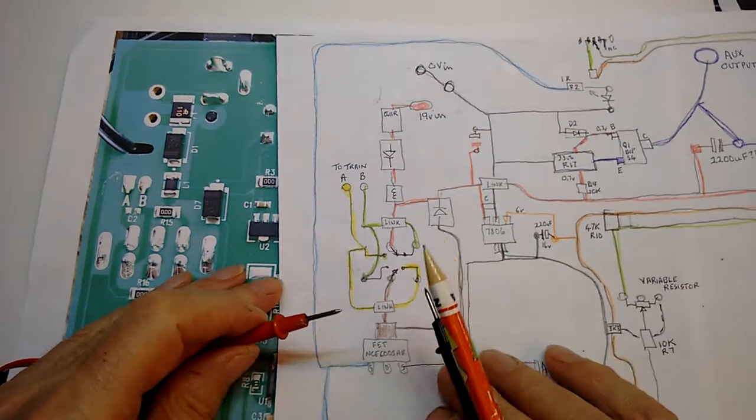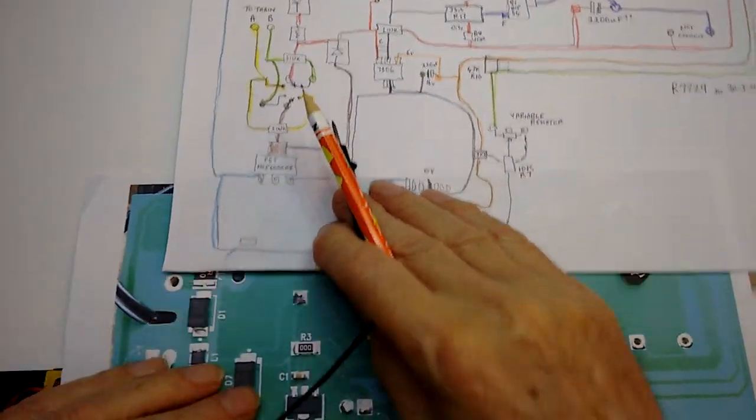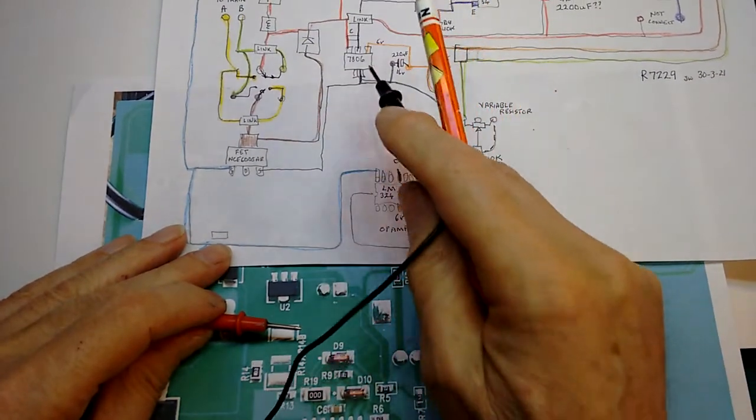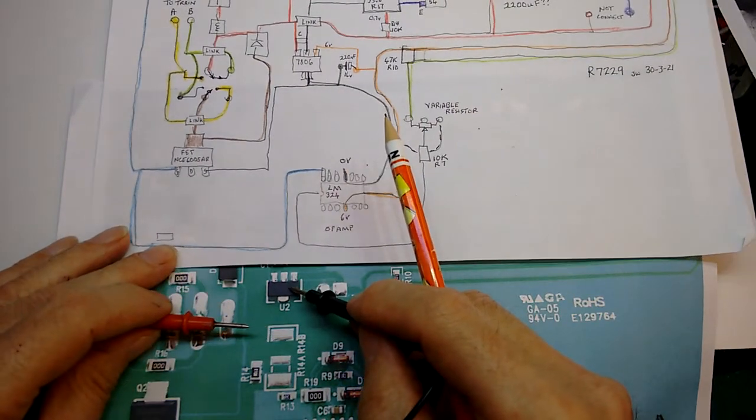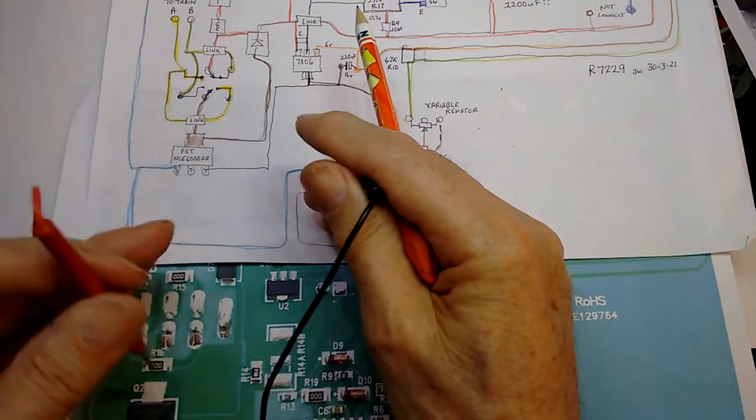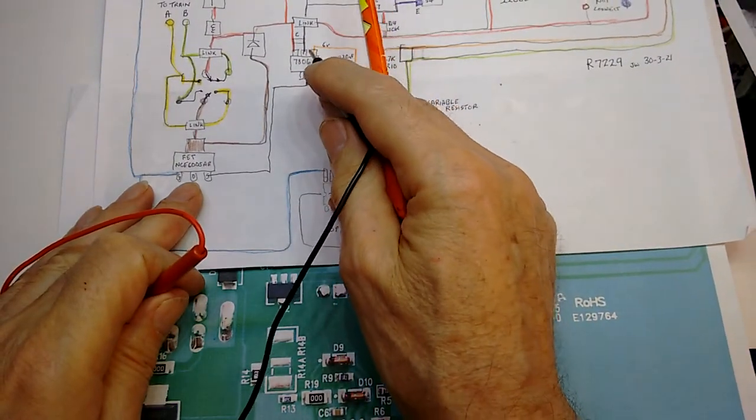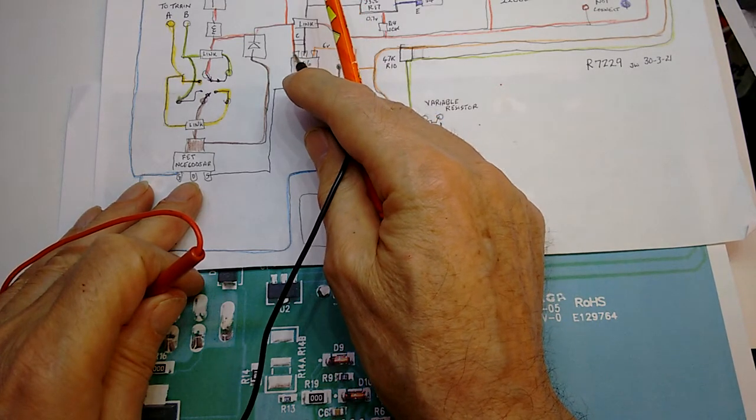I can then come across. So for example, if we have a look at the voltage regulator, the 7806, that's this here. Then I can do the same sort of thing - put my probes on.